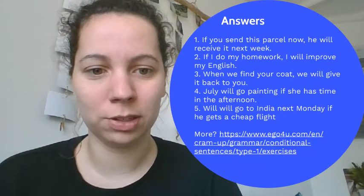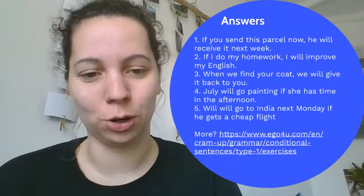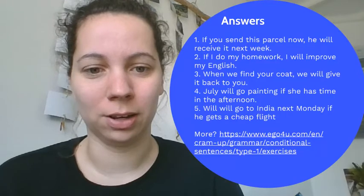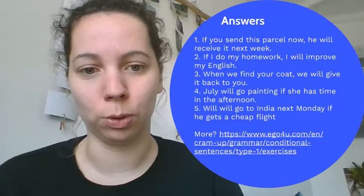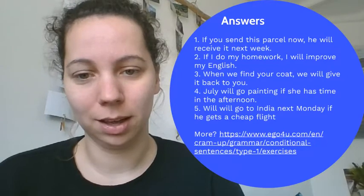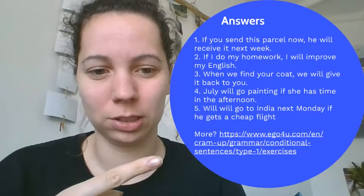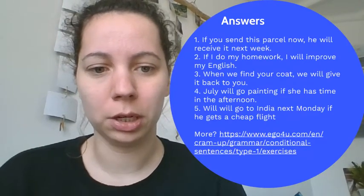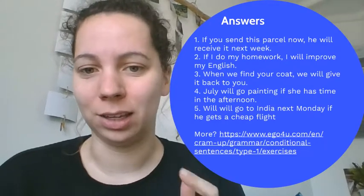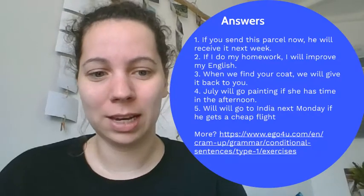Sentence five: 'if' is in the middle of the sentence, so the second part is the condition and the first part is the consequence. In the first part we get 'will go,' and in the second part present simple: 'gets.' If you want more practice — this was only five sentences — google 'conditional sentences type one ego for you' and it'll come up. You can copy it from the screen since you can't click links in YouTube.